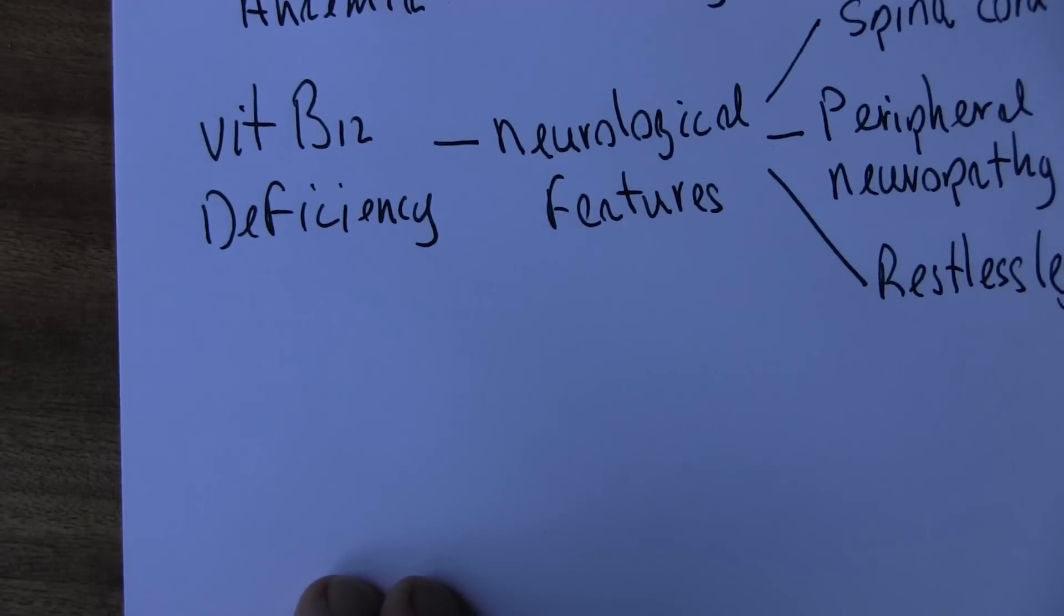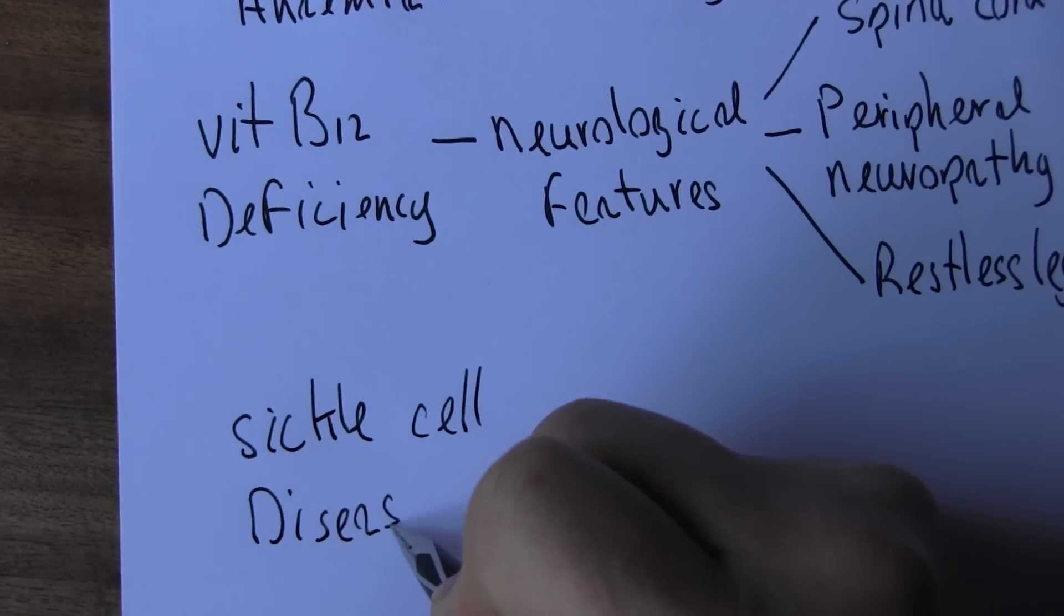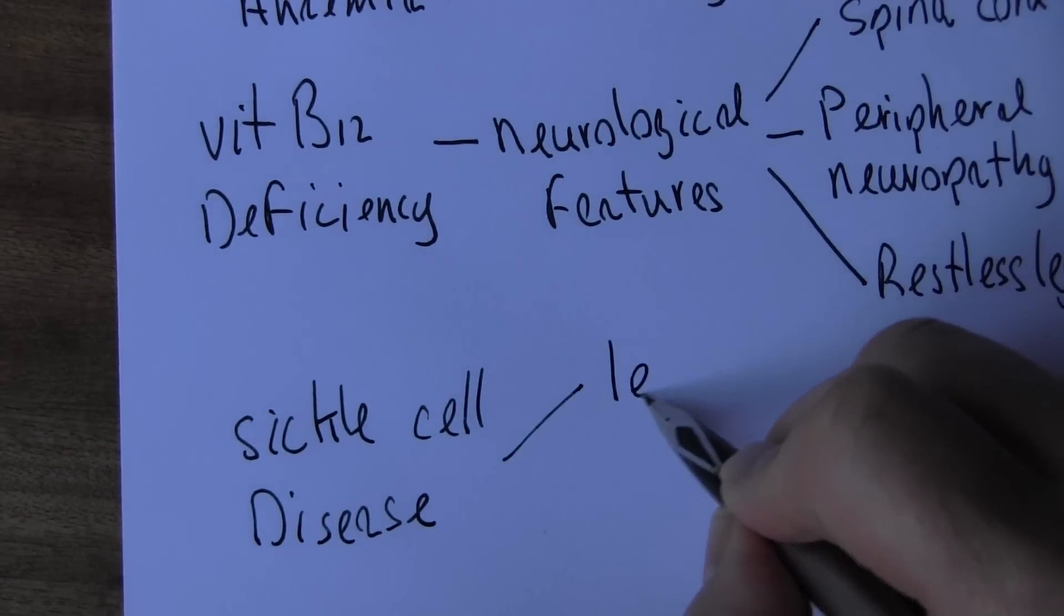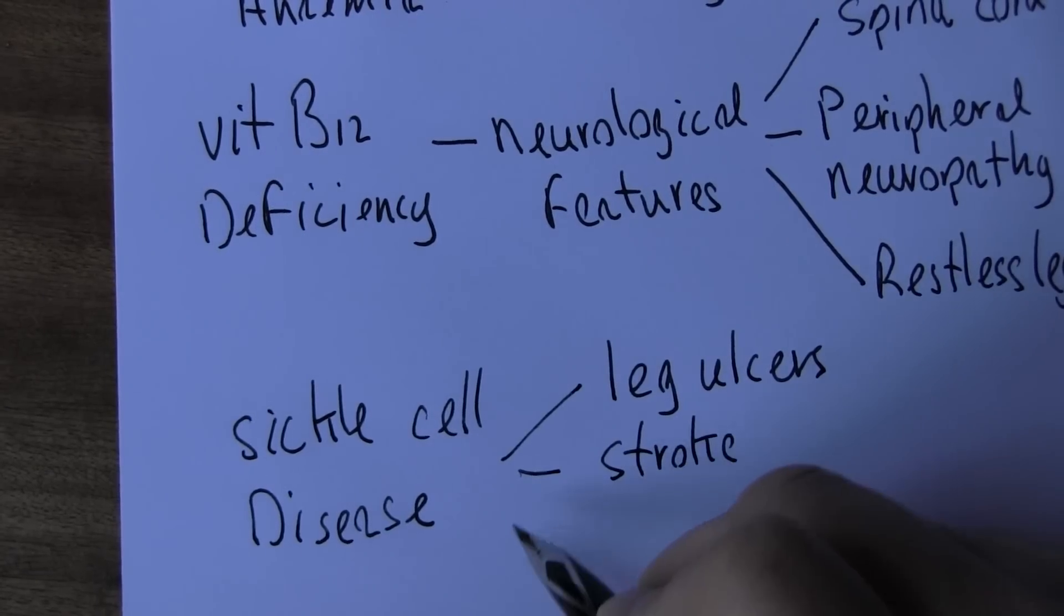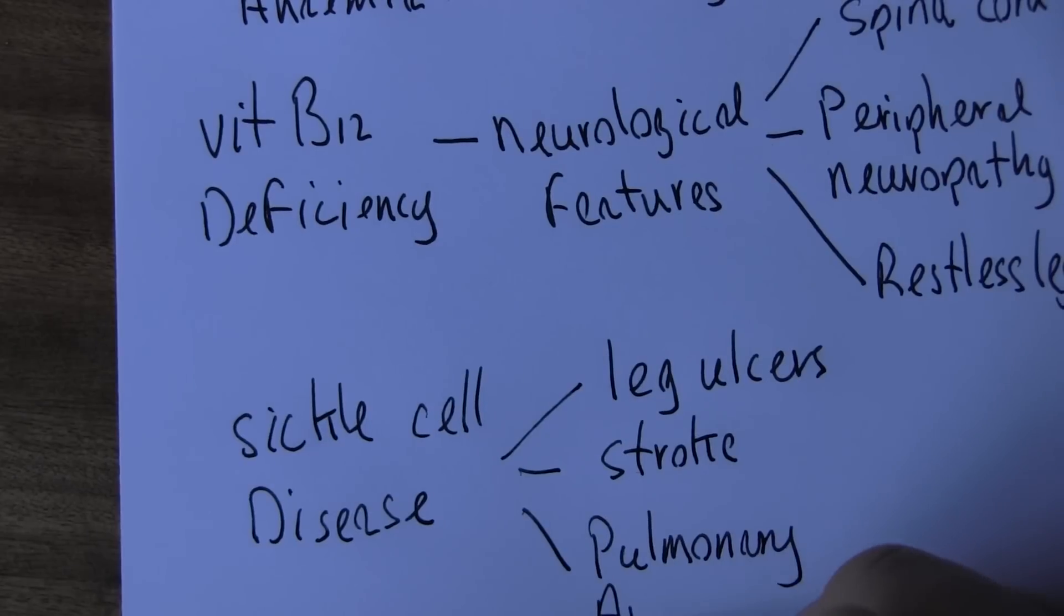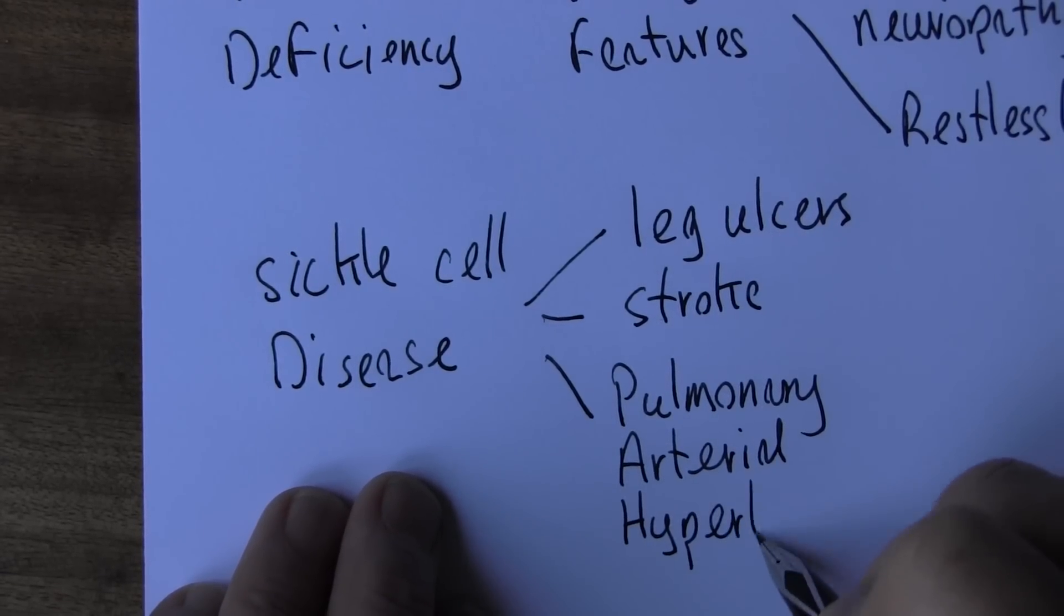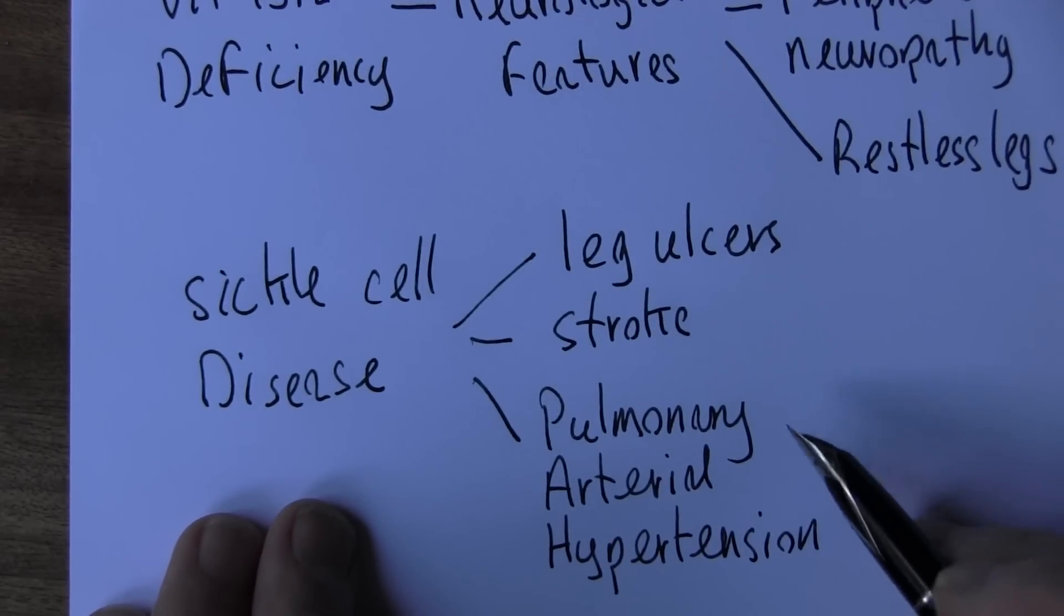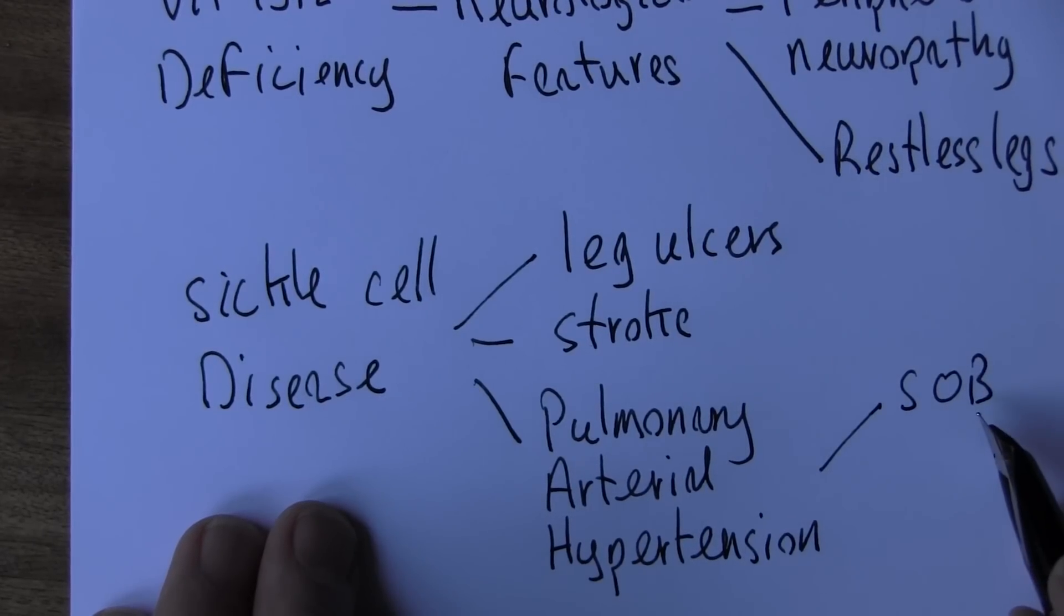I think the last one I'll mention is the sickle cell. So we know that sickle cell disease can cause sickle cell anemia. But sickle cell disease can also lead to other clinical features such as leg ulcers, stroke, and features consistent with pulmonary arterial high blood pressure, hypertension. And this can cause features such as, I won't write them all down, but shortness of breath. It starts with shortness of breath on exertion then becomes shortness of breath even at rest, fatigue.